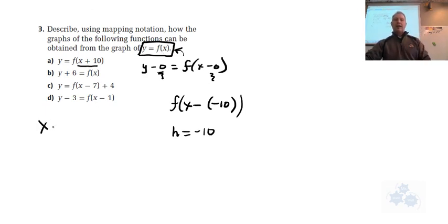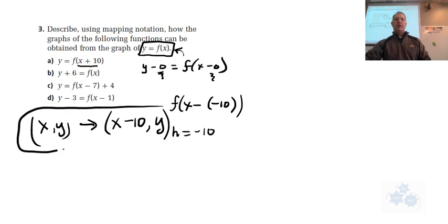So we're going left 10 units. So mapping notation says this. If you take x and y, you're going to map the new function is going to be x minus 10 with the same y value. So that's your answer for a. Moving the whole graph, moving it left 10 units means that you take every x value and you subtract 10. And then you put the new point.